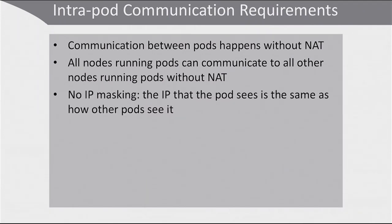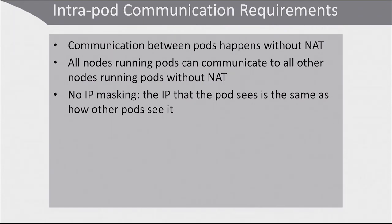There is no IP masking, and the IP that the pod sees is the same as how other pods see it. This also means there are specific challenges running Kubernetes networking in cloud environments, because typically the IP that the cloud instance sees is not the same as how other pods see it. In a typical configuration, the nodes hosting the pods are in their own network, like 192.168.1.0/24. The pods are often in an isolated subnet like 10.1.0.0/24. The hosts as well as the pods should be able to directly connect to all others without NAT, so you must be very careful in setting up routing and ensure that pods and hosts can resolve all routes to all networks.